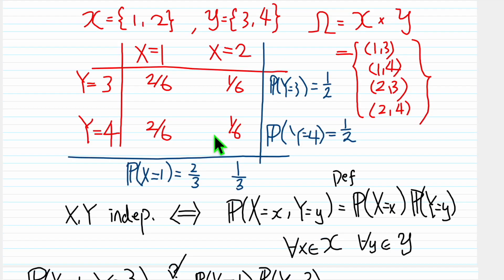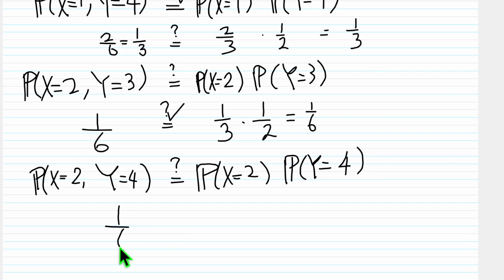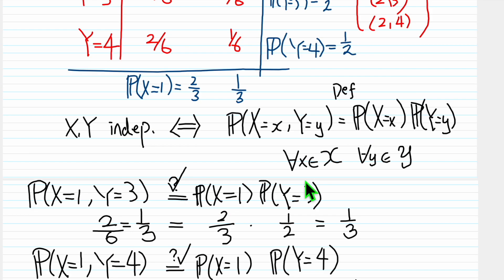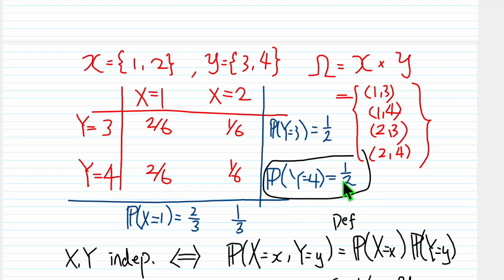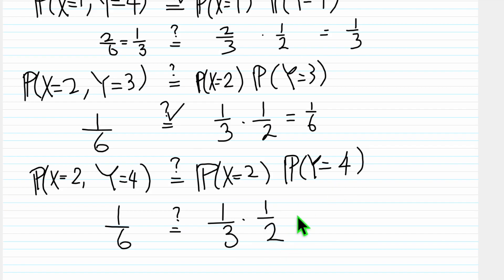X=2, Y=4. (X=2, Y=4), this one, 1/6. P(X=2) is this number, so 1/3, and then Y=4, this one, half. Yes, this is true.